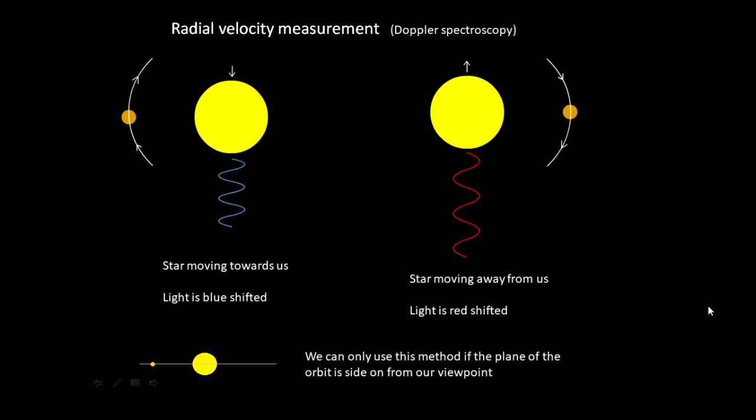We can only use this method if—if you look at the diagram below—if the plane of the orbit of the exoplanet is such that we are looking side-on at it, so the star is getting closer and further away from us. If we were looking from above, the distance wouldn't be changing and we wouldn't be able to see this.